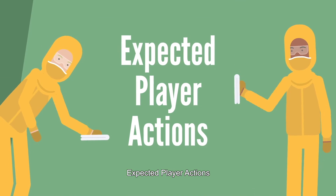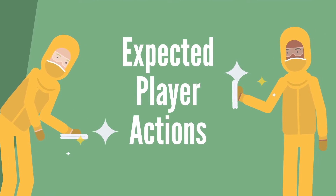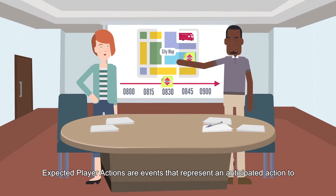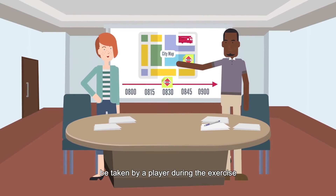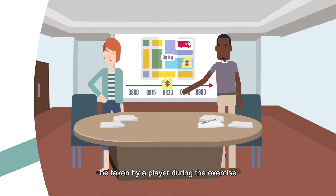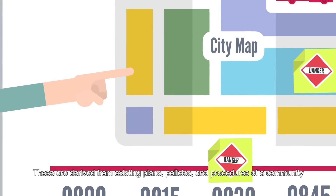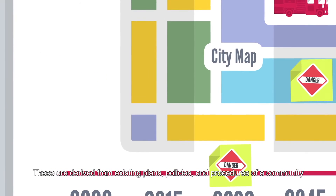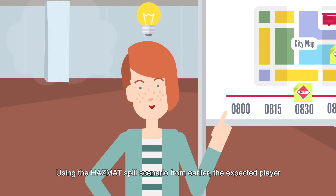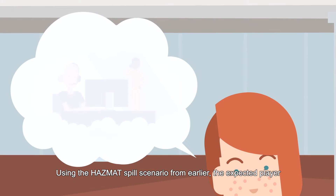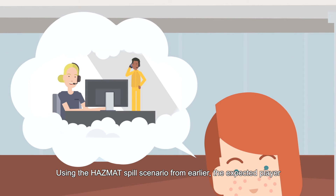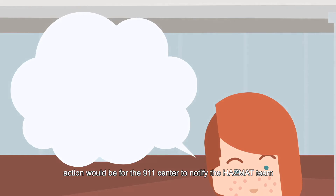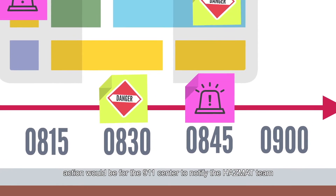Expected player actions are events that represent an anticipated action to be taken by a player during the exercise. These are derived from existing plans, policies, and procedures of a community. Using the hazmat spill scenario, the expected player action would be for the 911 center to notify the hazmat team.